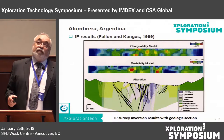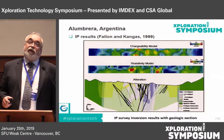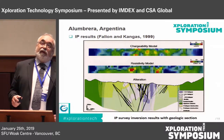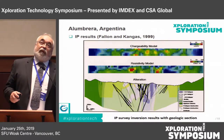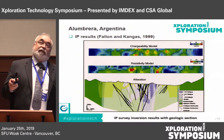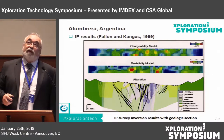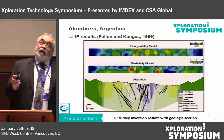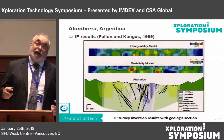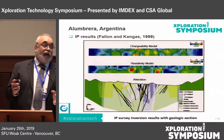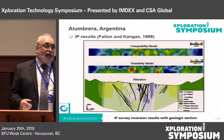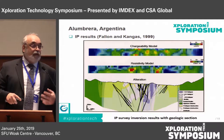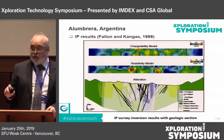Looking at an IP section across this deposit, the chargeability model shows conductive zones. We can see the high in the near surface, which is the bright reds, in areas where there's been extensive alteration indicated by the black veins mapped out in this case. In the resistivity, the hot colors are the conductive zones, and we can start to see what might be a halo starting to appear. If this were expanded and viewed in plan, we might be able to map out some of the zonation going on within the deposit.